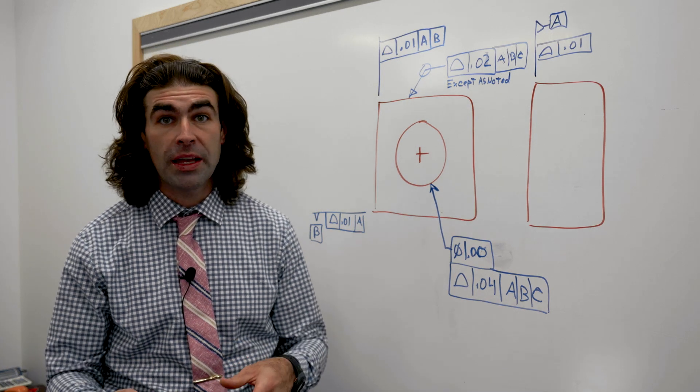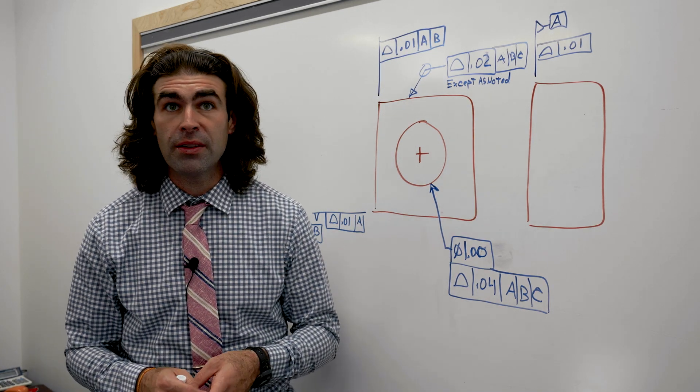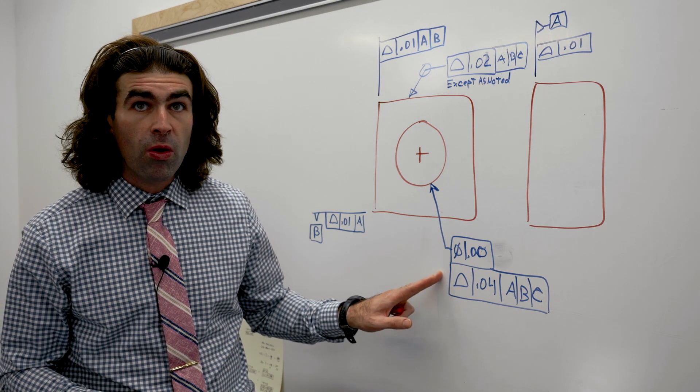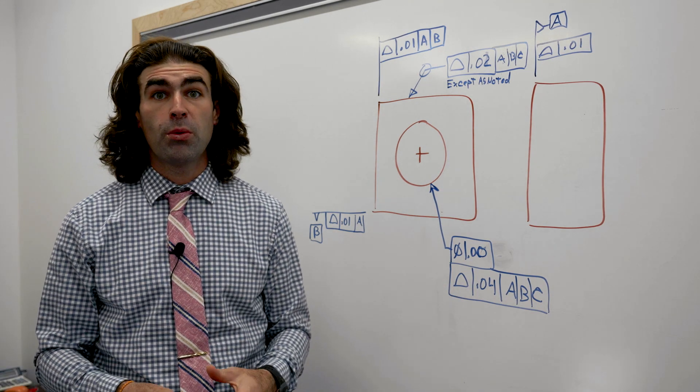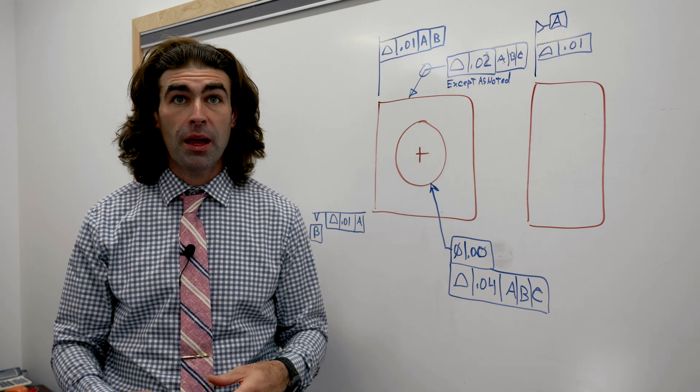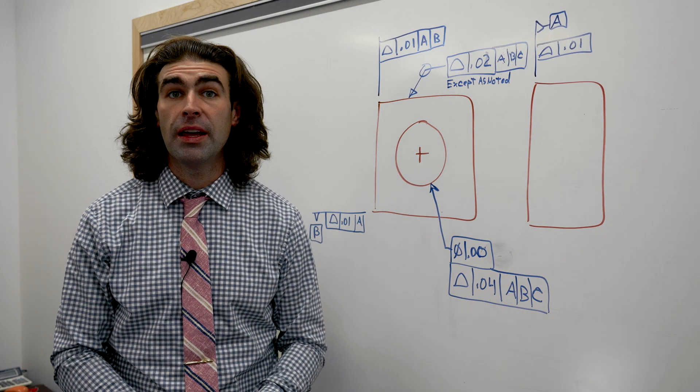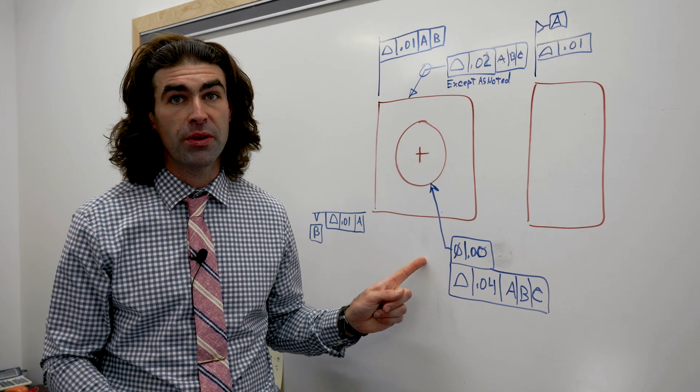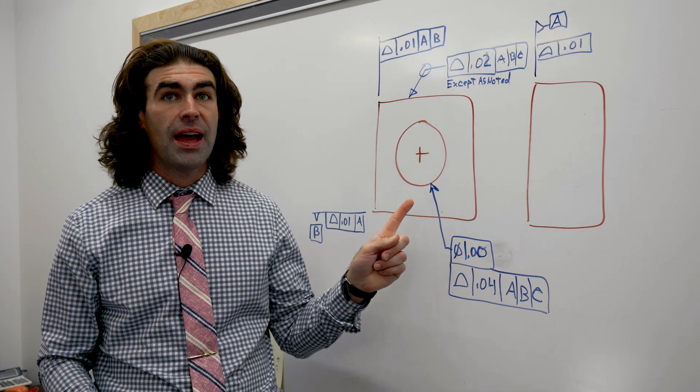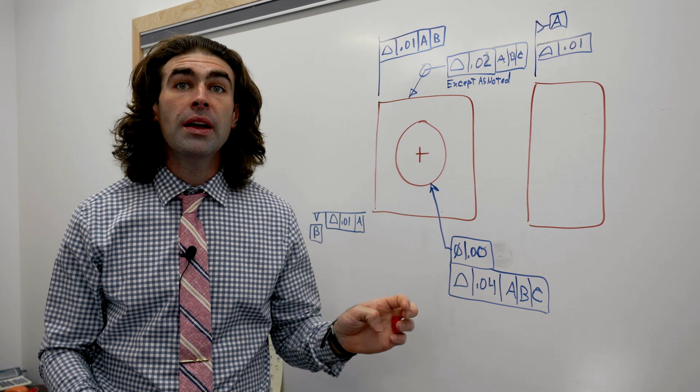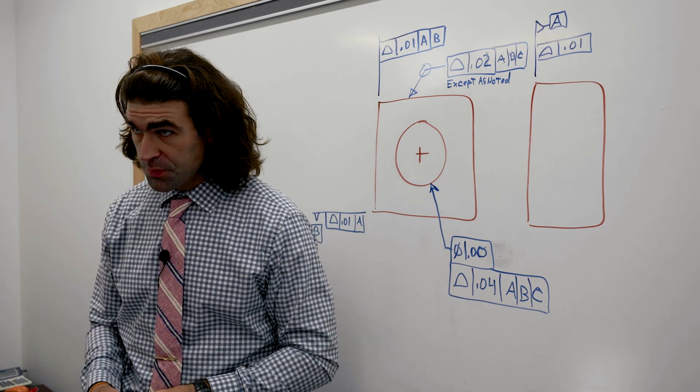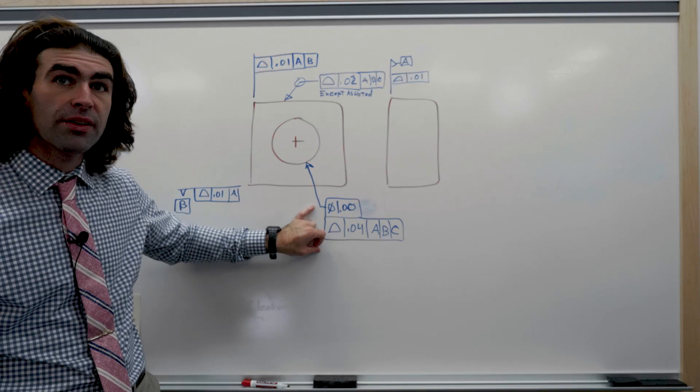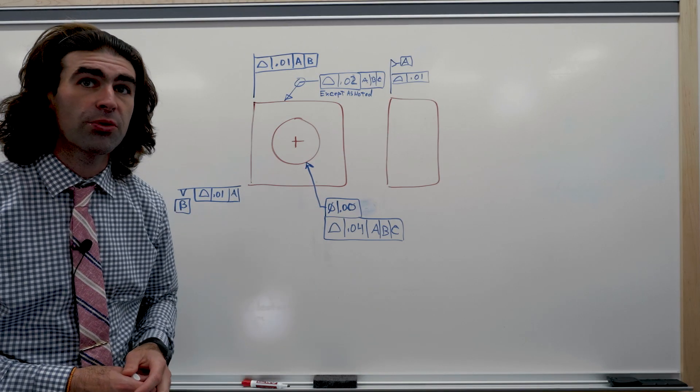But when it gets to making the part and especially inspecting the part, profile with a hole is going to cause big problems. People aren't used to seeing it. It's not inspected the same way as a position tolerance. You're not looking for the actual mating envelope of this feature. You're looking for the surface of the hole. So in this whole drawing, I would say that everything here is good to go, except this profile should be changed to a position.